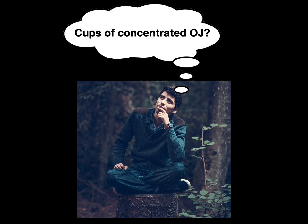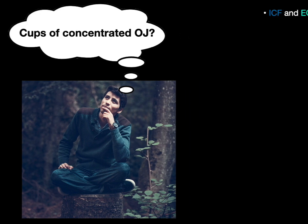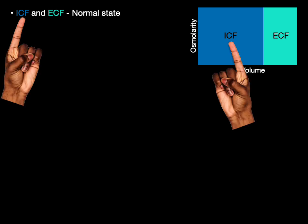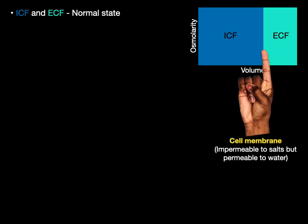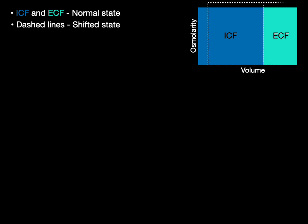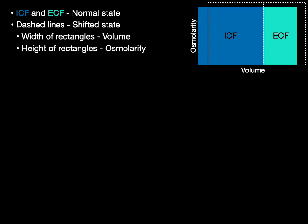This is not about cups of concentrated orange juice — the same principle applies to our extracellular compartment, where the larger blue rectangle is intracellular fluid and the smaller turquoise one is extracellular fluid. These two compartments are separated by the cell membranes, which are impermeable to salts but permeable to water. The dashed lines represent some shifted state as we add different fluids to the plasma. The width of the rectangles represents the volume of the compartments, and the height represents the osmolarity.